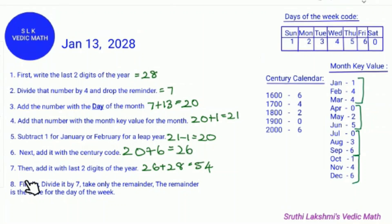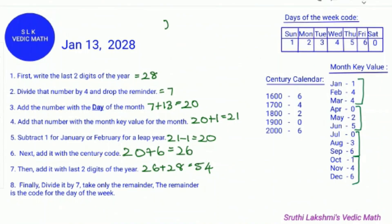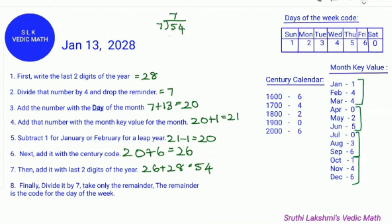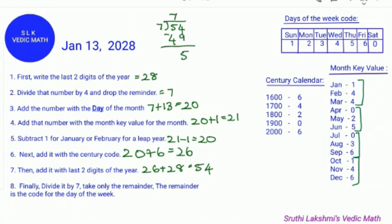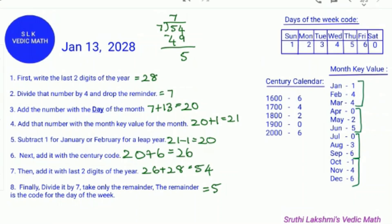Then finally, it says to divide it by 7 and take only the remainder — the remainder is the code for the day of the week. So we divide 54 by 7. Since 7 times 7 is 49, we do 54 minus 49, which gives us 5. So we find 5 on the day of the week code table — 5 is Thursday.